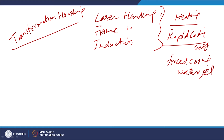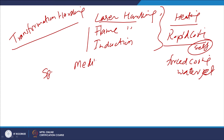Water jet is used for cooling surfaces heated by flame and induction. In the case of laser, self-cooling is normally sufficient if the section thickness is heavy. All three methods are applicable for specific categories of metals having sufficient carbon content and alloying elements, especially in the case of ferrous metals.